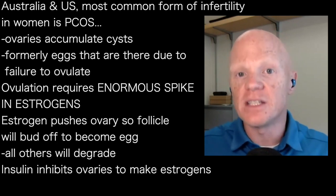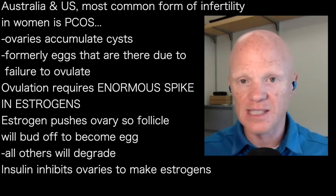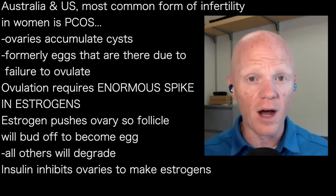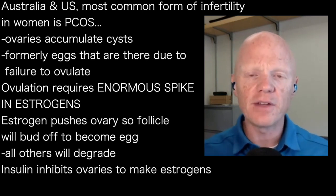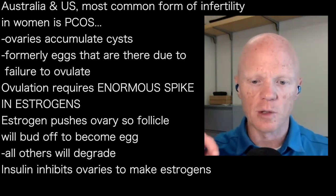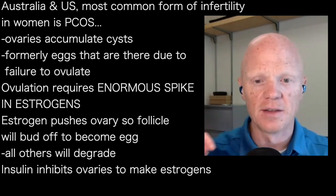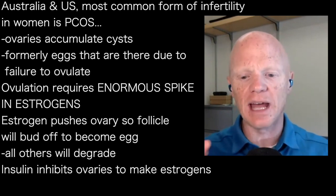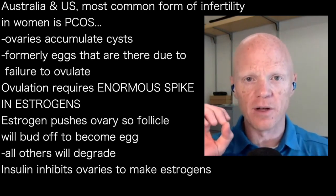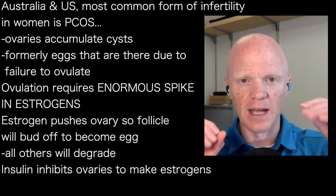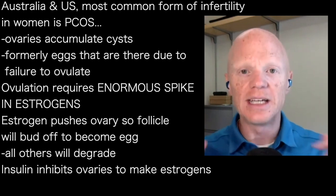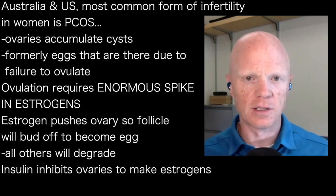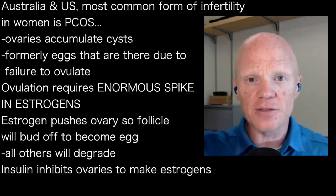The obvious problem with PCOS is that the ovaries are accumulating cysts. All of these cysts are actually little eggs that are there because the woman fails to ovulate during her ovulatory cycle. Ovulation requires an enormous spike of estrogens — the hormone that pushes the ovaries to have one of these developing follicles bud off, which is the act of ovulation. In doing so, all the other little follicles degrade and work back into the ovary. But you have to have an estrogen spike in order to ovulate.